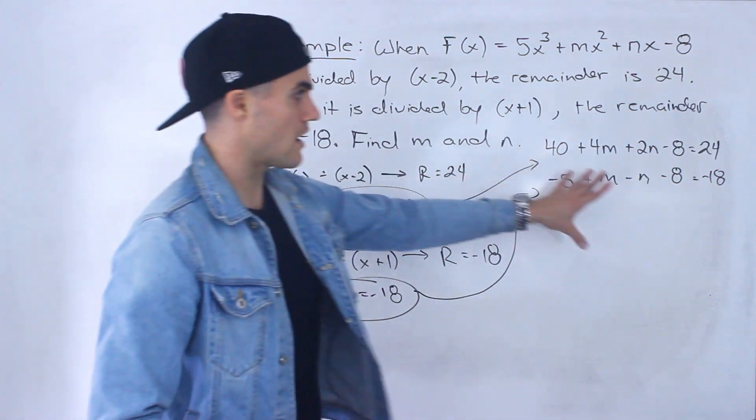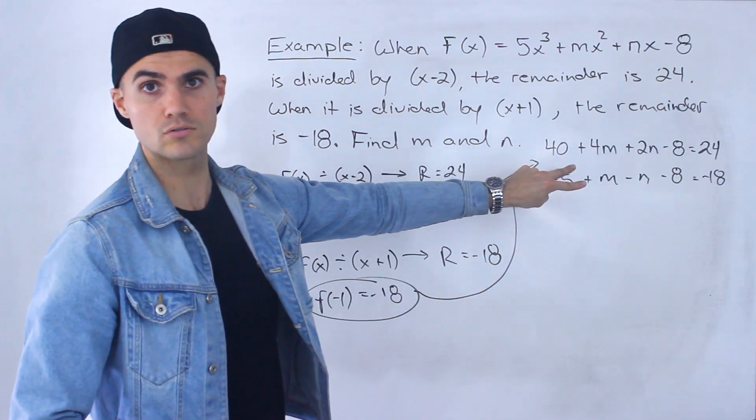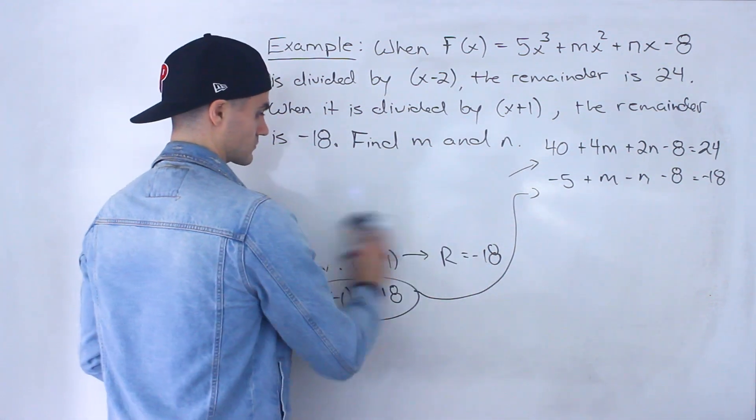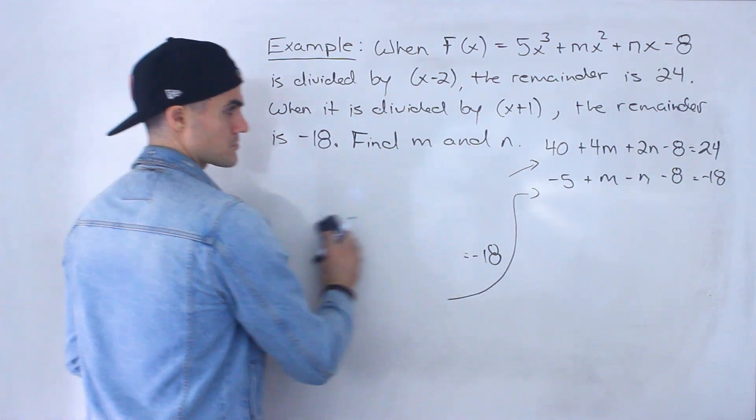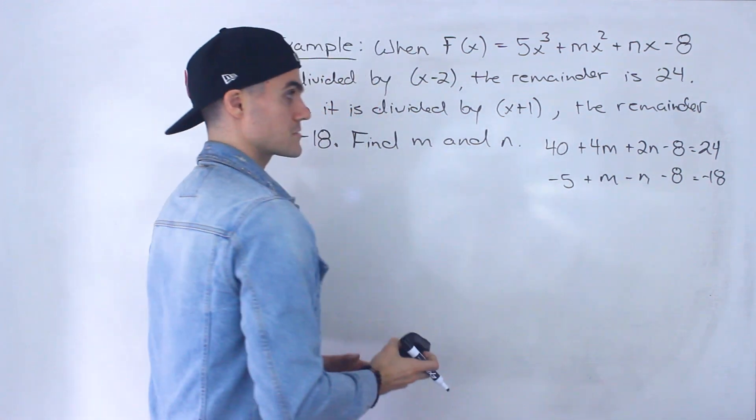So we're going to simplify these equations. But the point is, now that we have two equations, we could solve for those two unknowns using substitution or elimination. I'm going to use probably substitution, just because these m and n's are by themselves over here.